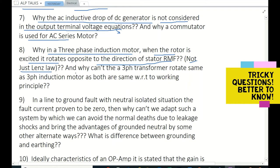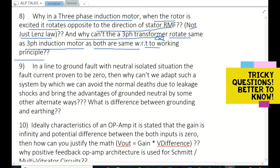Not just Lenz's law, but why can't the three-phase transformer rotate the same three-phase induction motor as both are same with respect to working principle? Yes, anyhow it won't rotate, but how much you understand, you just think of it. In a line to ground fault with neutral isolated situation, the fault current proven to be zero, then why can't we adopt such a system by which we can avoid the normal death due to leakage shocks and bring the advantage of grounded neutral by some other alternate ways? What is the difference between grounding and earthing?